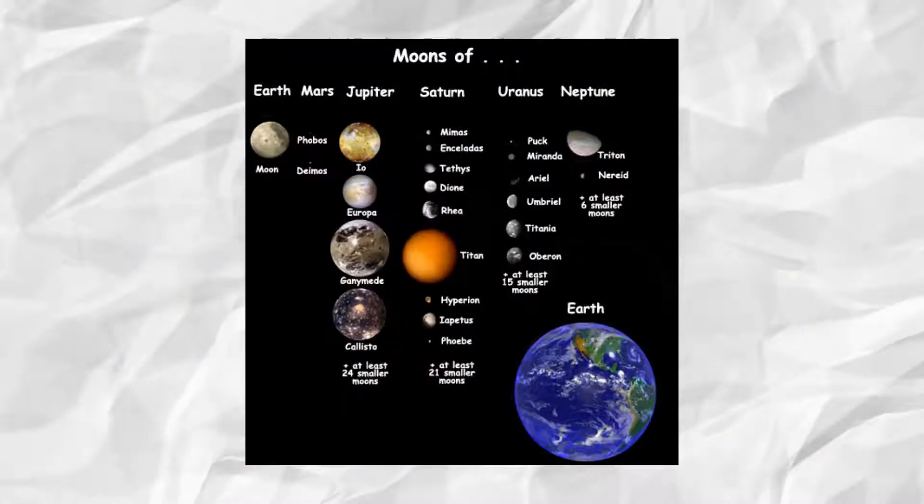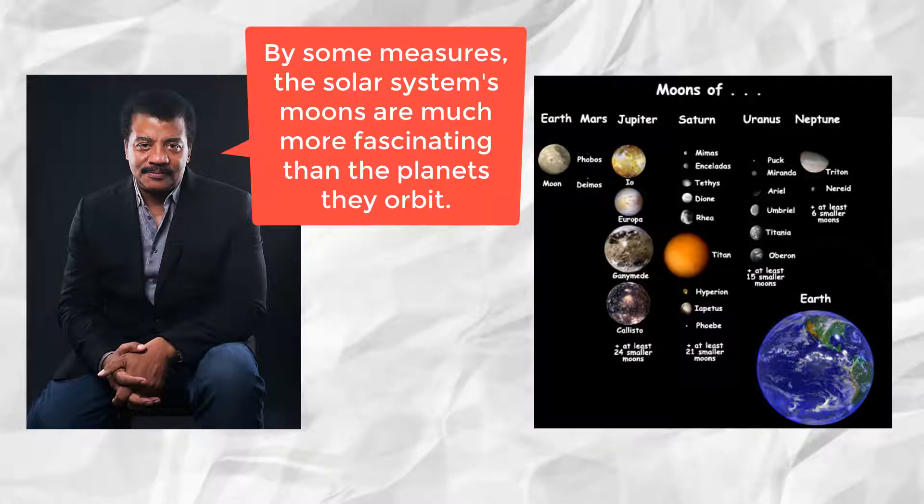The moons of the planets are described to be more interesting than the planets for some reason, and Neil supports this by showing how diverse Jupiter's moons are.